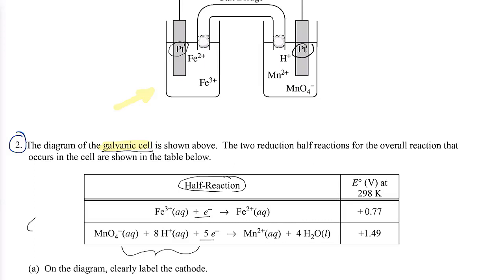Leo the lion says GER — gaining electrons is reduction. Why? Because if you gain electrons, your charge drops. Look at iron +3 going to iron +2. The standard reduction potentials give us a measure of spontaneity. These are voltages — a potential difference that tells me direction and spontaneity. MnO4⁻ plus 8 protons gaining 5 electrons has a much larger positive voltage, indicating a bigger pathway. On the AP, they only give you the reduction potentials you need for the question.